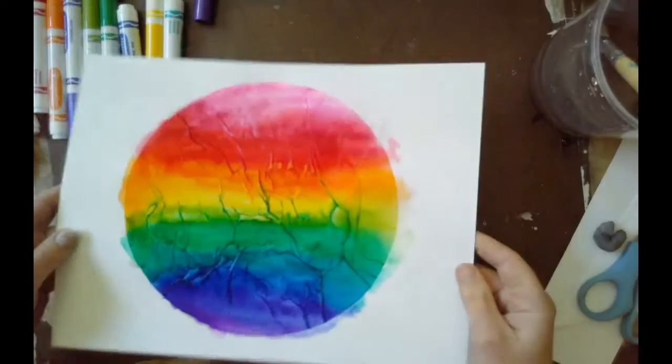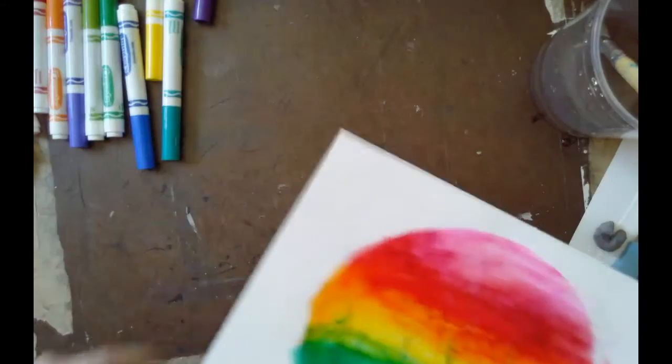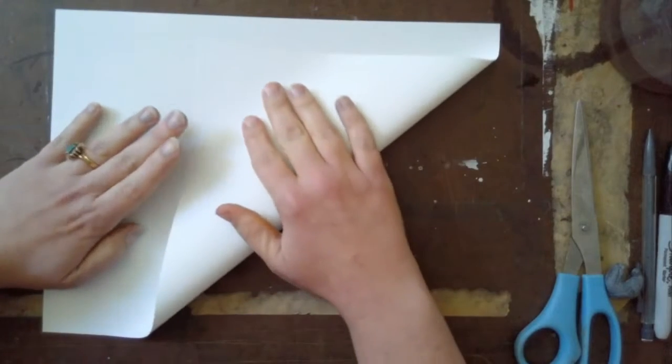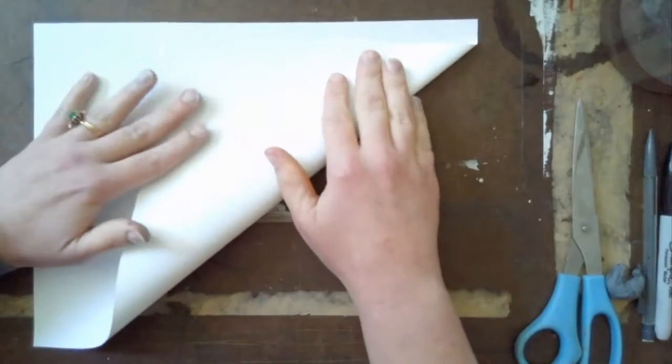When you're done with the water, set this aside to dry while we work on our unicorn. Your unicorn can be whatever color you want. I'm using a piece of white paper, but I need to turn it into a square, so I'm going to fold this side up to the top.